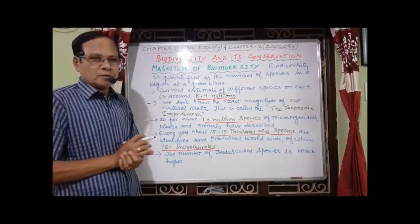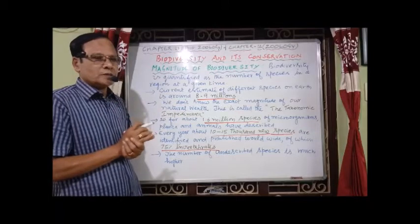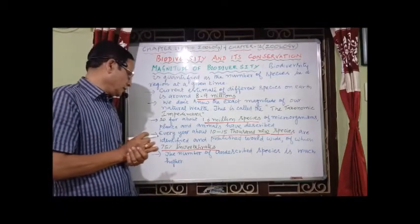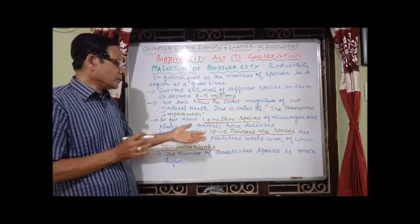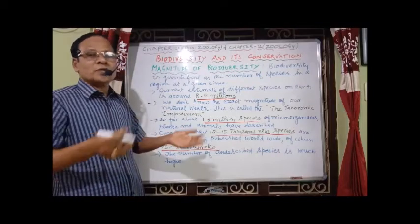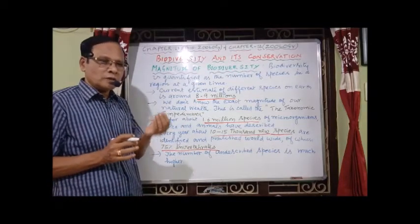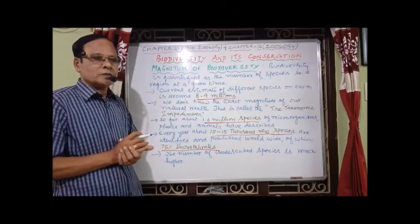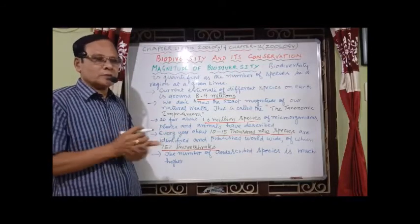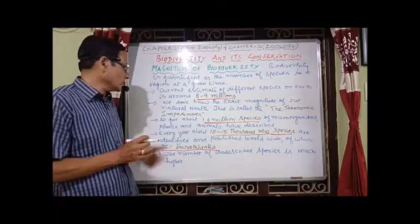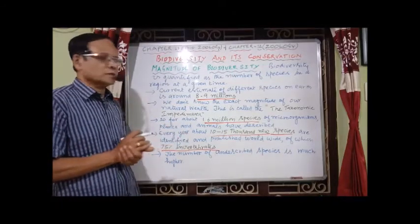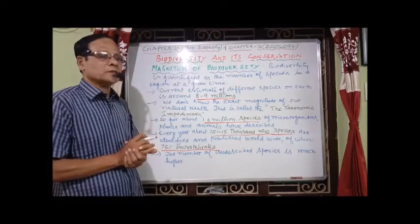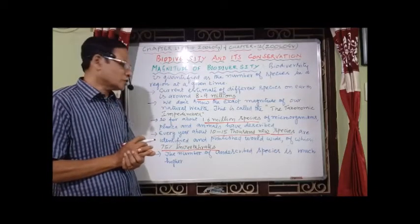We know only a few species that have been described. The number of undescribed species is much higher — we know only a small fraction of the natural wealth formed on this Earth.